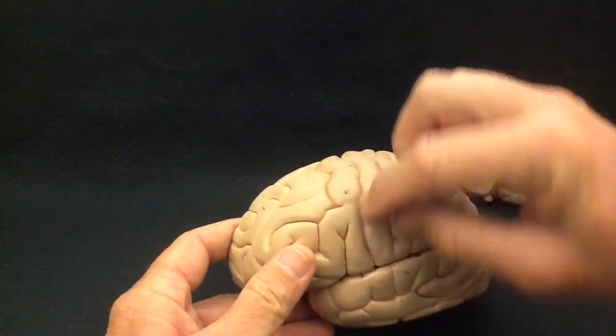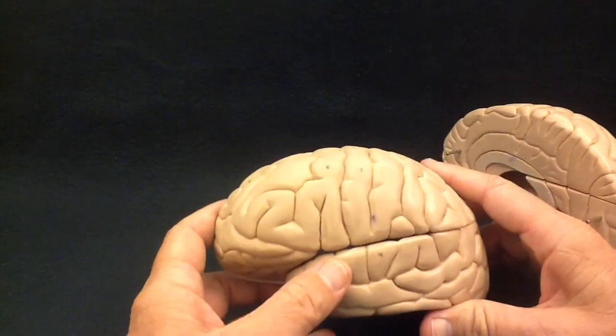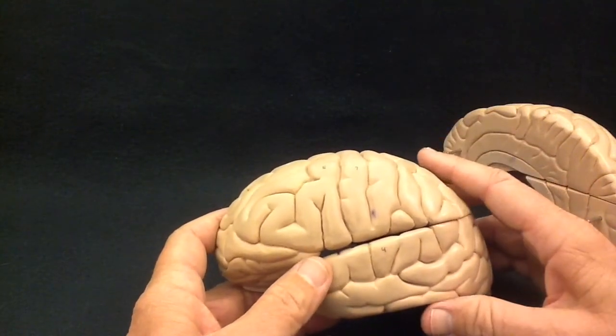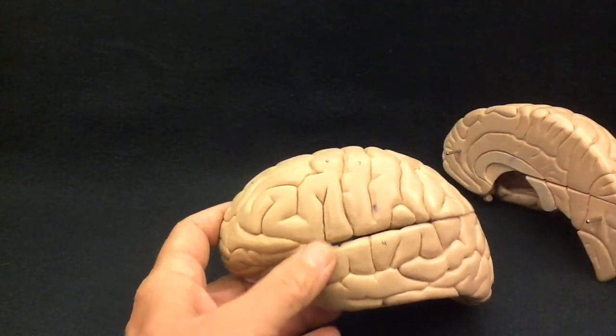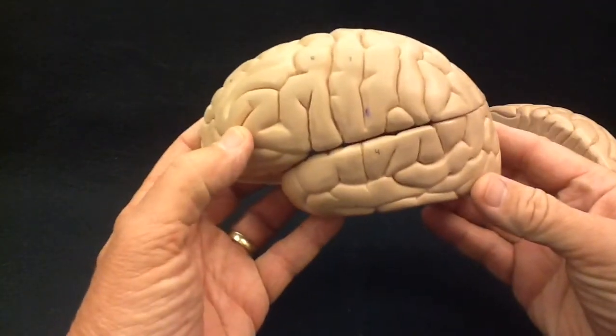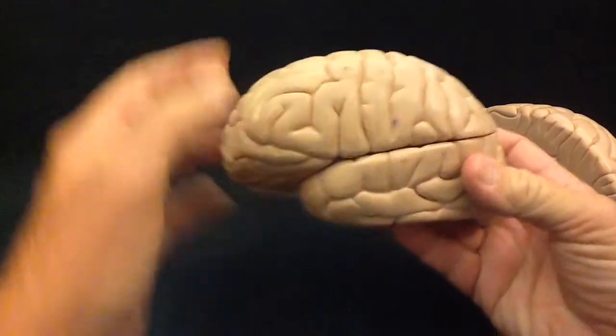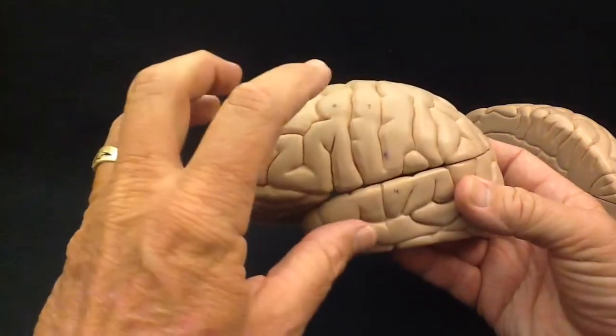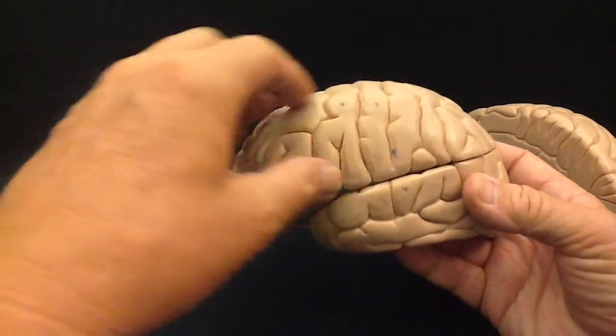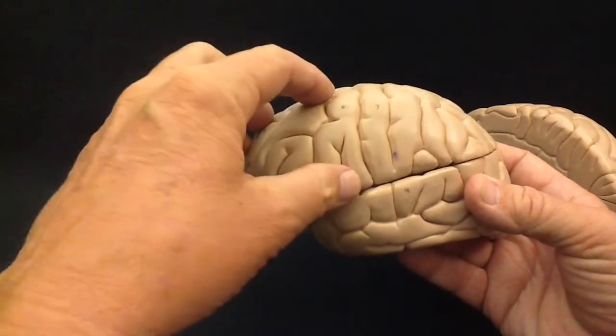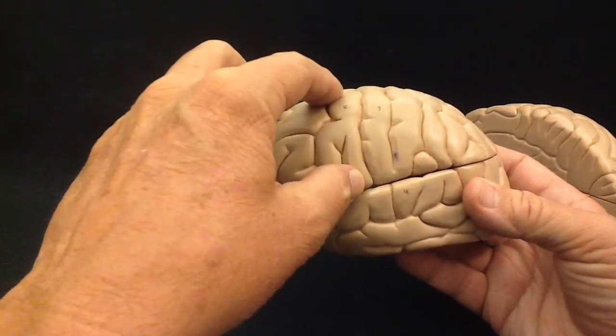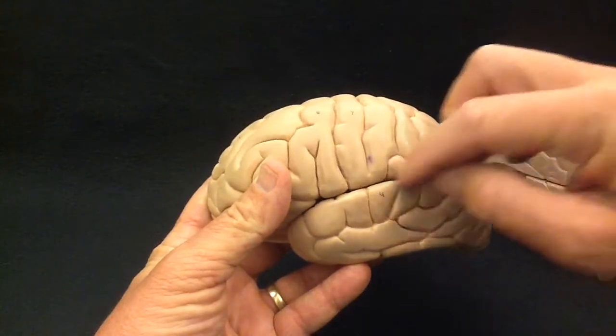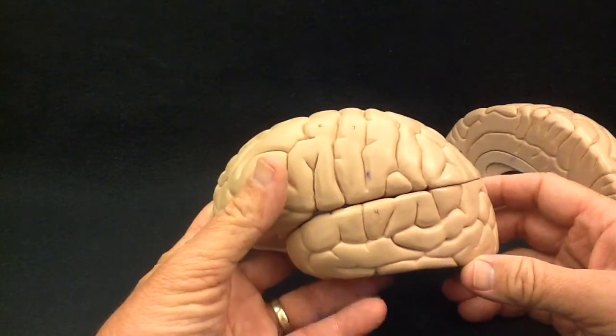Now, this one sulcus here helps us divide the surface of the cerebrum into lobes. Initially, we're going to see four lobes over the surface of the cerebrum. The central sulcus here and the lateral fissure here are going to help us divide this up. All of this brain matter here, anterior to the central sulcus, this is called the frontal lobe of the cerebrum. The majority of this behind the central sulcus is known as the parietal lobe of the cerebrum.